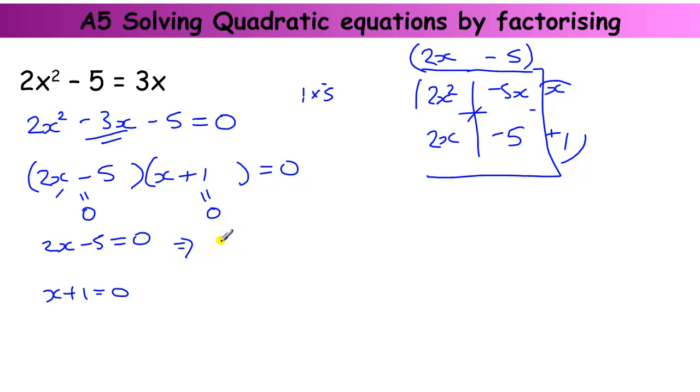This one, when I try to solve it as a simple equation, I get 2x equals 5, which means x equals 5 over 2, which is 2.5. And when I solve this one, x must be equal to minus 1. So there's my two solutions, 2.5 and minus 1.